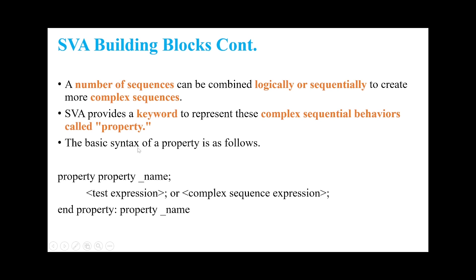A number of sequences can be combined logically or sequentially to create more complex sequences. SVA provides a keyword to represent complex sequential behaviors called 'property'. The basic syntax is: property keyword, name of the property (user-defined), end property. Between 'property' and 'end property' we define the test expression or complex sequence expression.